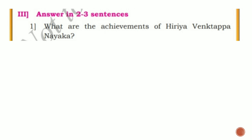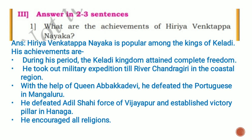Next, third main question: answer in two to three sentences. First question: what are the achievements of Hiriya Venkatappanayaka? Answer: Hiriya Venkatappanayaka is popular among the kings of Keladi. During his period, the Keladi kingdom attained complete freedom. He took out a military expedition till river Chandragiri in the coastal region. With the help of Queen Abbaka Devi, he defeated the Portuguese in Mangaluru. He defeated the Adil Shahi force of Vijayapura and established a victory pillar in Hanaga. He encouraged all religions.